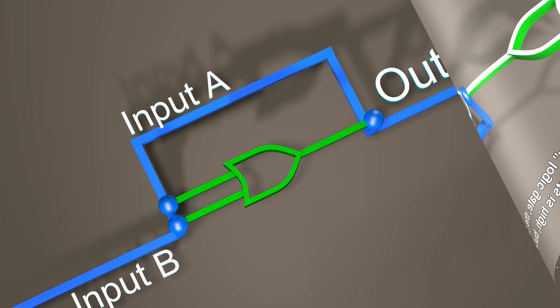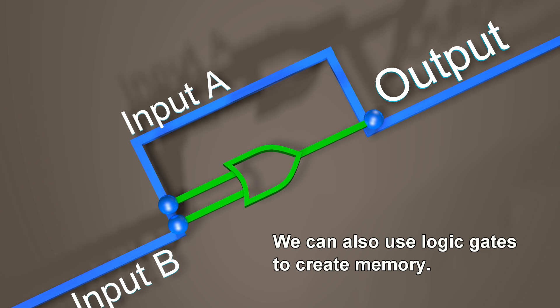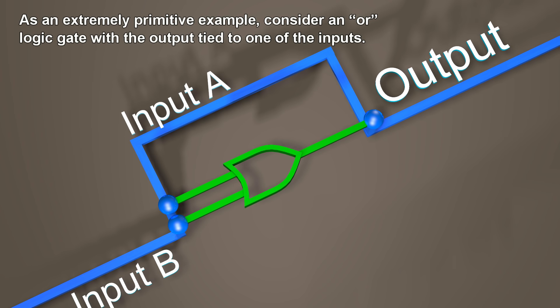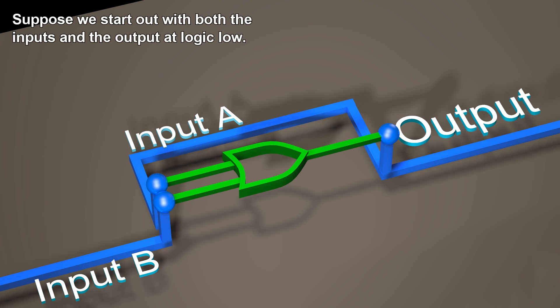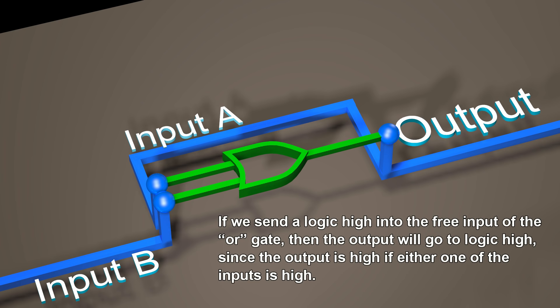We can also use logic gates to create memory. As an extremely primitive example, consider an OR logic gate with the output tied to one of the inputs. Suppose we start out with both the inputs and the output at logic low. If we send a logic high into the free input of the OR gate, then the output will go to logic high, since the output is high if either one of the inputs is high.